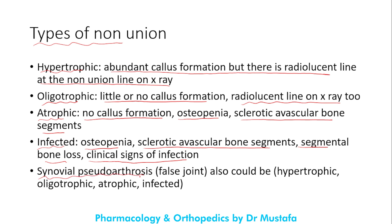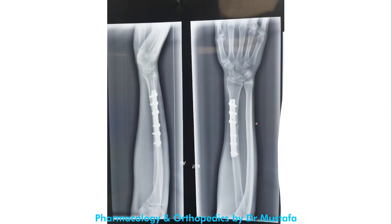The final type of non-union is synovial pseudoarthrosis — a false joint at the fracture site — which is also classified as hypertrophic, oligotrophic, atrophic, or infected. Here we have an X-ray of a patient who fractured the radius, immobilized by internal fixation using plates and screws. As we can see, there is little callus formed and the fracture line is still visible, so this is a non-union of the oligotrophic type.